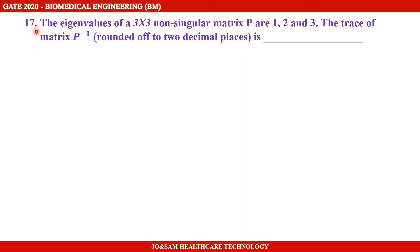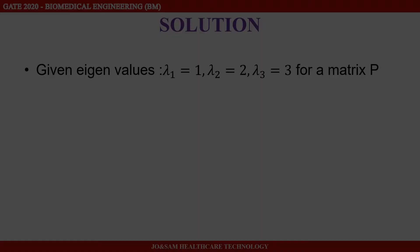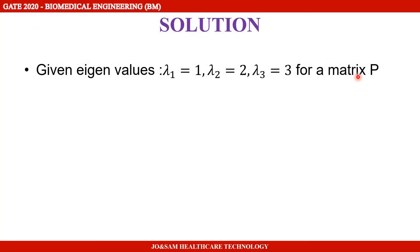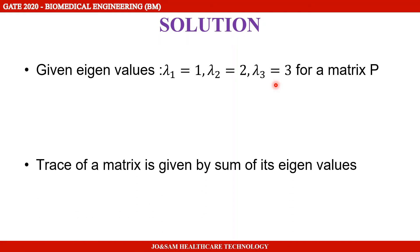In this question, we will talk about the basic concepts. Matrix P has eigenvalues 1, 2, and 3. The trace of P inverse is the sum of the eigenvalues of P inverse.